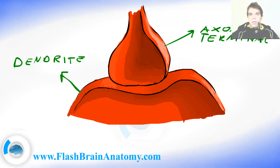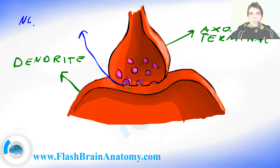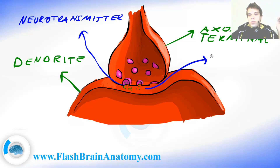This is done with the help of vesicles that can be found in the axon terminal. Those vesicles contain substances called the neurotransmitters, and they can fuse with the membrane as you can see here. As they fuse, they release the neurotransmitter into the synaptic cleft. This space here between the axon terminal and dendrite is the synaptic cleft.